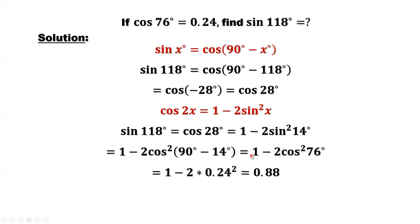Cosine of 76 equals 0.24. So this equals 1 minus 2 times 0.24 squared. We can calculate to get the final answer. This implies sine of 118 degrees equals 0.88. This is the answer.